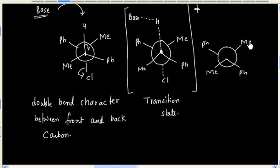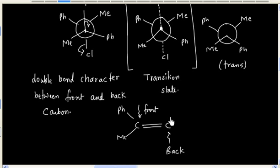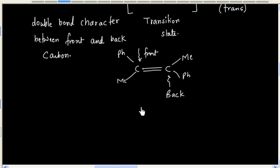Finally, we will have this product. You can see this product is basically the trans product. This is the alkene — the front carbon has methyl and phenyl, and on the back carbon the phenyl is opposite to the front carbon's phenyl. So in this case we will have trans configuration — the trans isomer is formed in this reaction.